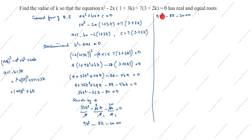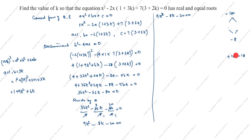To factor 9k squared minus 8k minus 20 equals 0, multiply 9 by 20 to get 180. We need two numbers that multiply to minus 180 and add to minus 8. Those numbers are minus 18 and plus 10: minus 18 plus 10 is minus 8, and minus 18 times 10 is minus 180. The biggest number takes the minus sign.